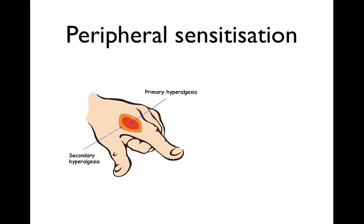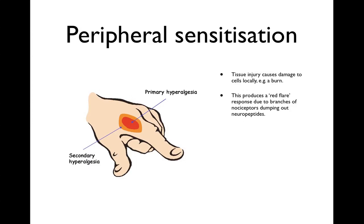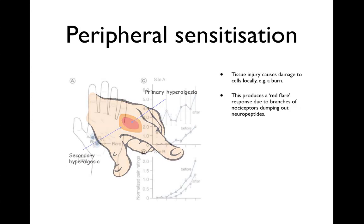Regarding peripheral sensitization: when we injure a tissue we get an area of primary hyperalgesia surrounding it, and then in a greater area around that we get an area of secondary hyperalgesia. In peripheral sensitization, tissue injury causes damage to cells locally — for example a burn — producing a red flare. This is neurogenic inflammation caused by a dumping of neuropeptides in the peripheral branches of the damaged nociceptors.